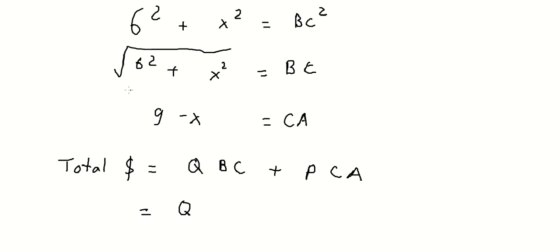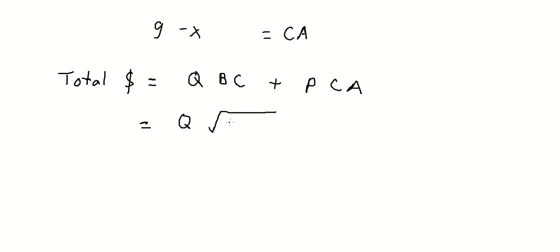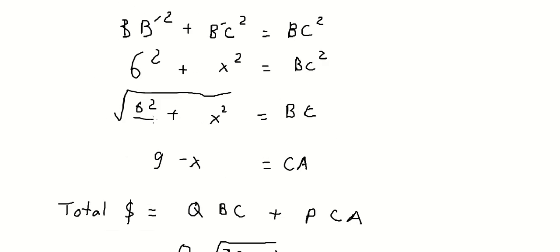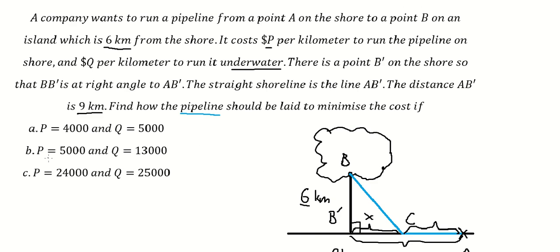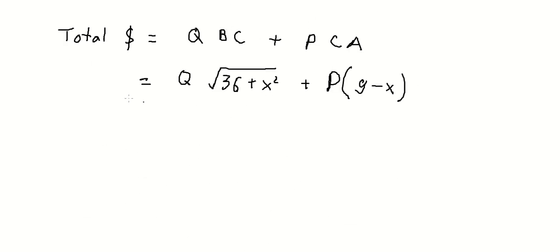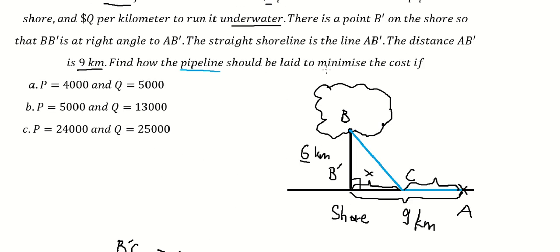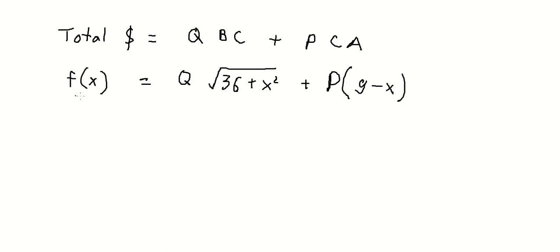BC equals the square root of 36 plus x squared, because 6 squared is 36, and CA equals 9 minus x. Since the cost rates (cube and B) are constants, we only follow x. So we define f(x) as the total cost function, and to minimize it, we need to find f-prime of x.